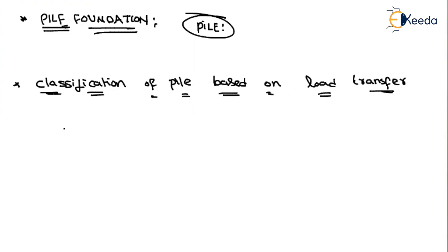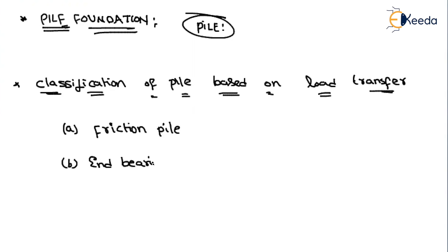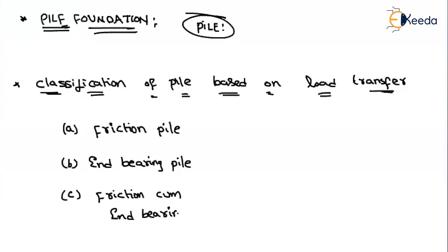Let me first tell you the types. First one is nothing but a friction pile, second one is an end bearing pile, and the third one is friction come end bearing pile.